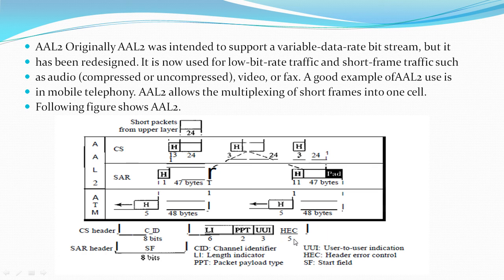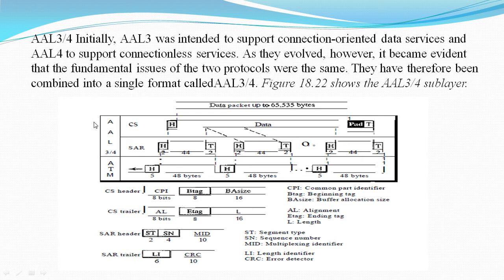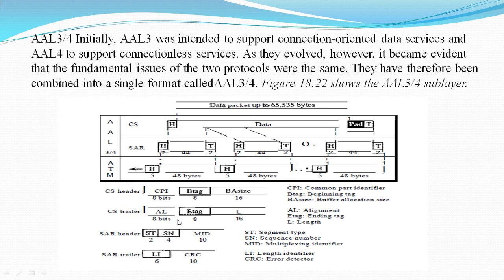AAL 3/4. The following figure shows AAL 3/4. Common Part Identifier: defines how the subsequent fields are to be interpreted; the value present is 0. Begin Tag: the value of this field is repeated in each PDU to identify all the cells belonging to the same packet; the value is the same as the end tag. Buffer Allocation Size: the 2-byte BA field tells the receiver what size buffer is needed for the coming data. Alignment: the 1-bit AL field is included to make the rest of the trailer 4 bytes long. Ending Tag: the 1-bit ET field serves as an ending flag; its value is the same as that of the beginning tag. Length: the 2-byte length field indicates the length of the data unit.